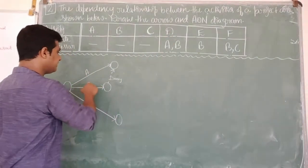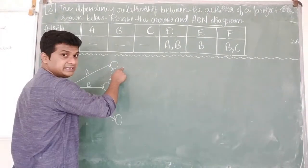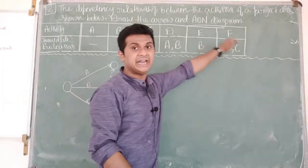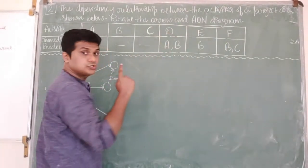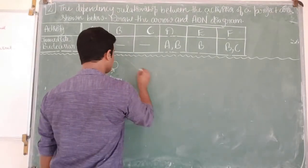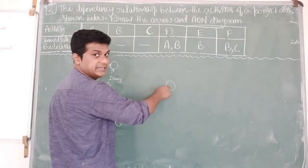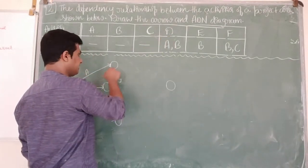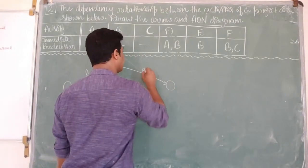Now activities A and B are ending at the same event. From this event, I can start activity D. Since D, E, and F are all ending activities, these three activities should end on the same event. So I'll indicate this as the ending event and draw activity D from the joint node to the ending event.